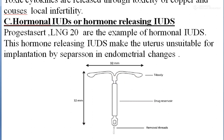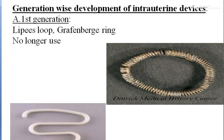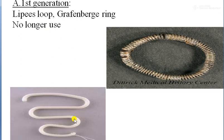Next, we will discuss the generation-wise development of intrauterine devices. There are three generations of IUDs. The first generation includes the Lippes loop and Grafenberg ring, which are no longer used. Their working principle involves causing endometrial changes and producing more phagocytosis to kill sperm cells and avoid pregnancy.